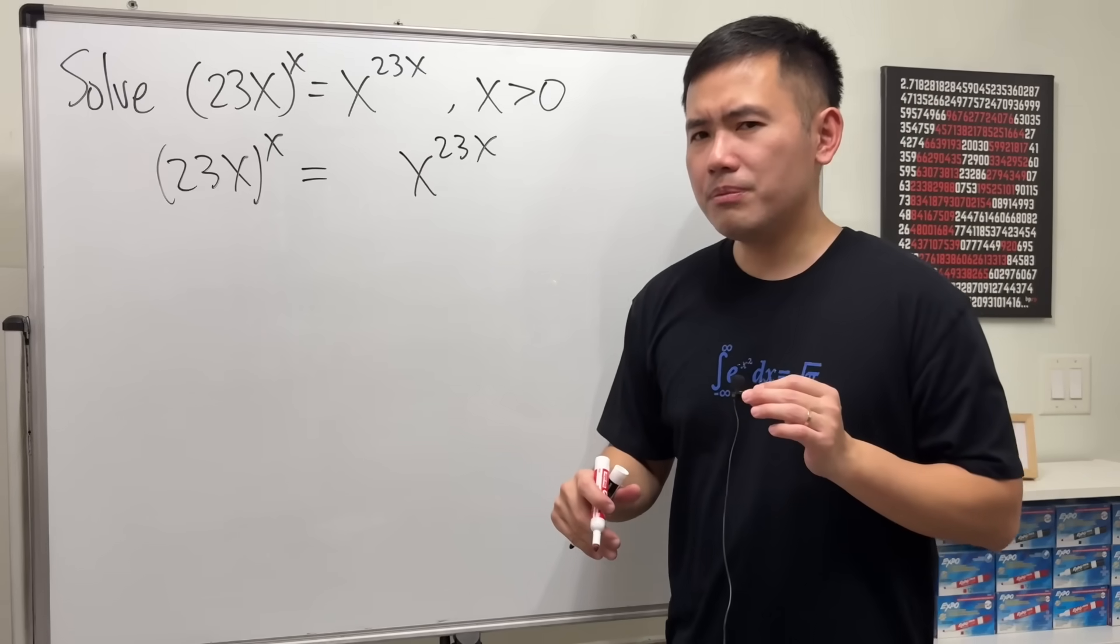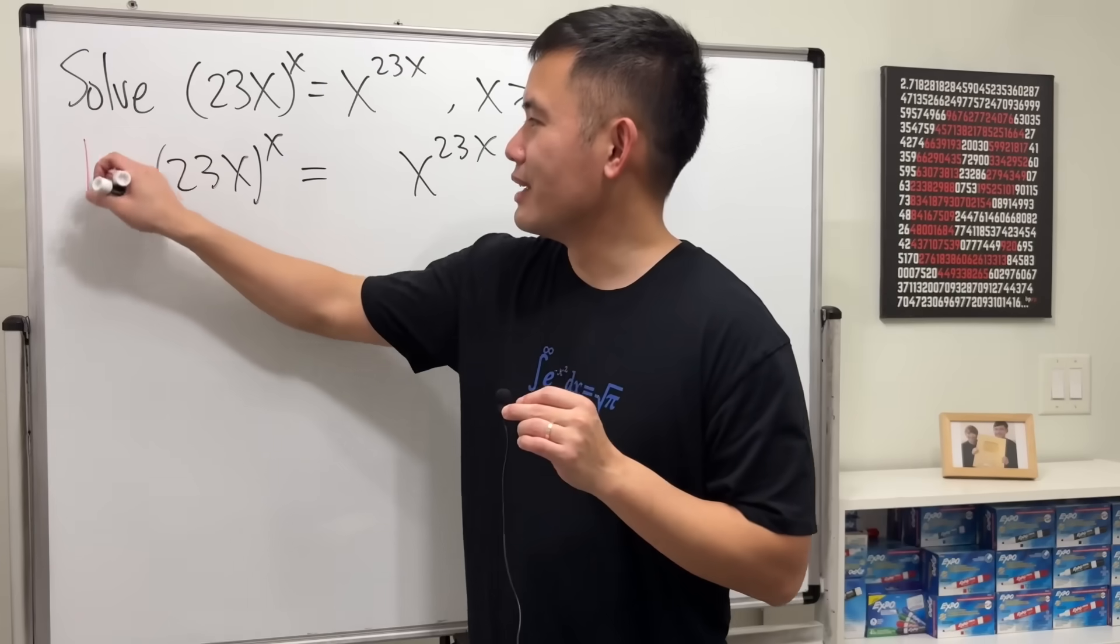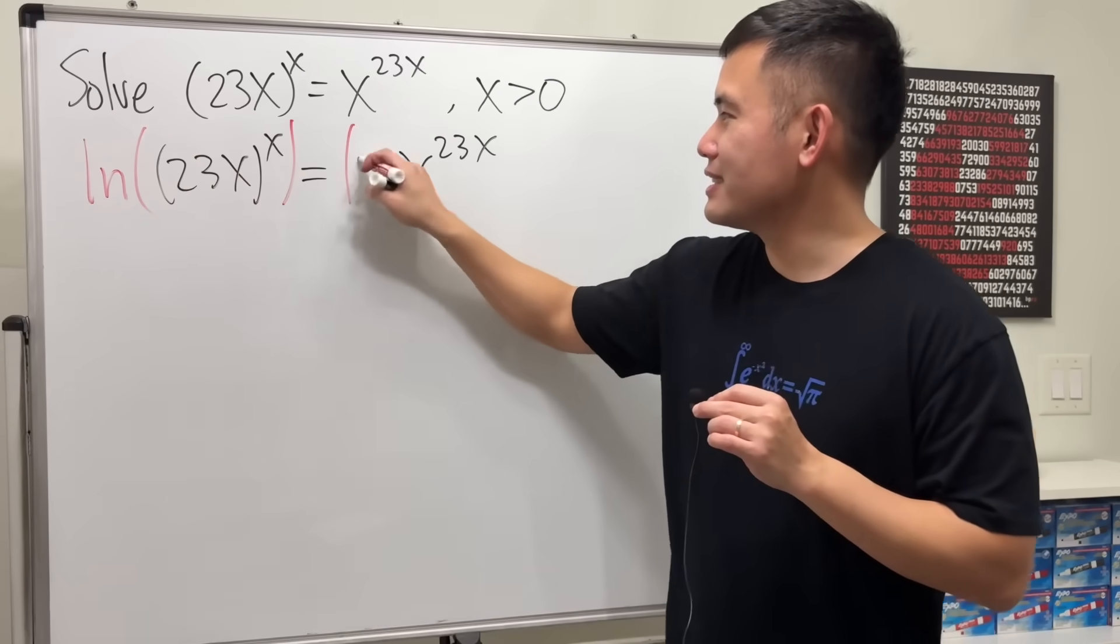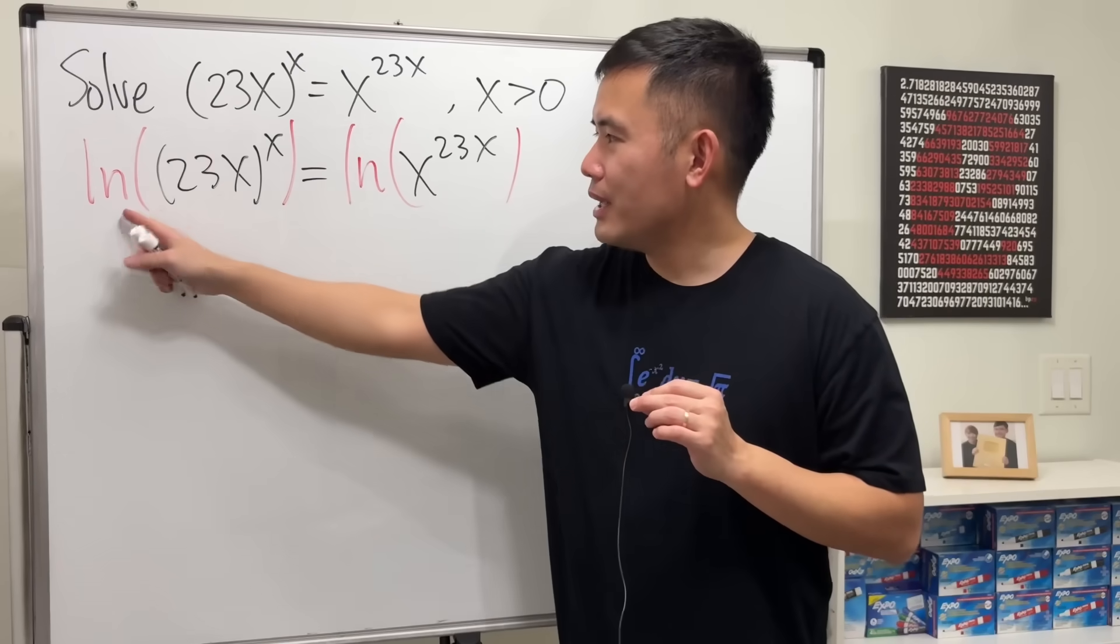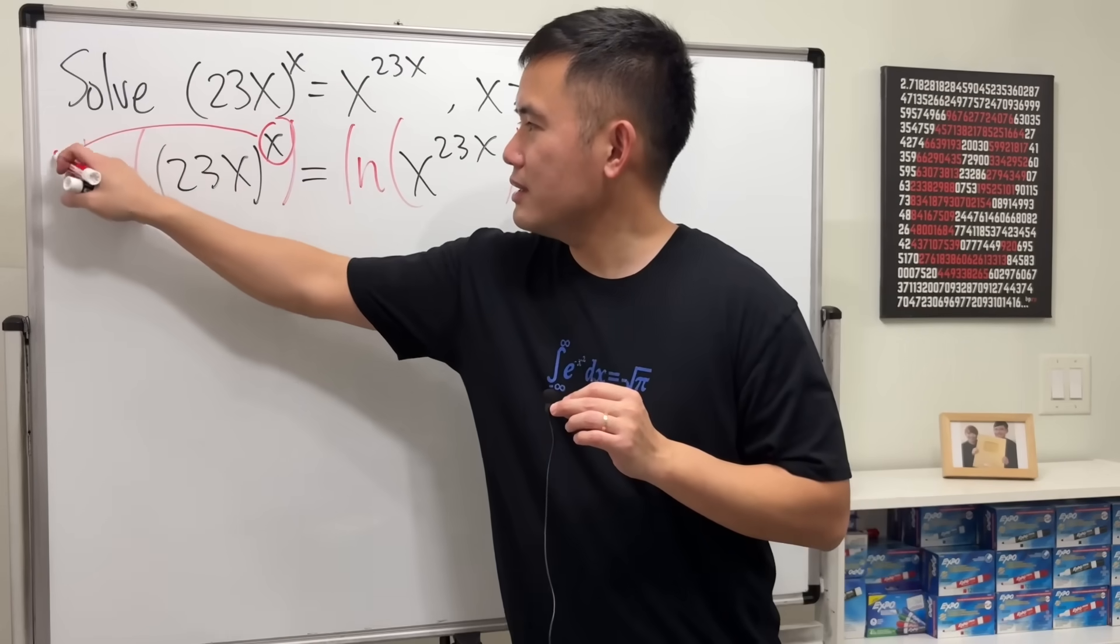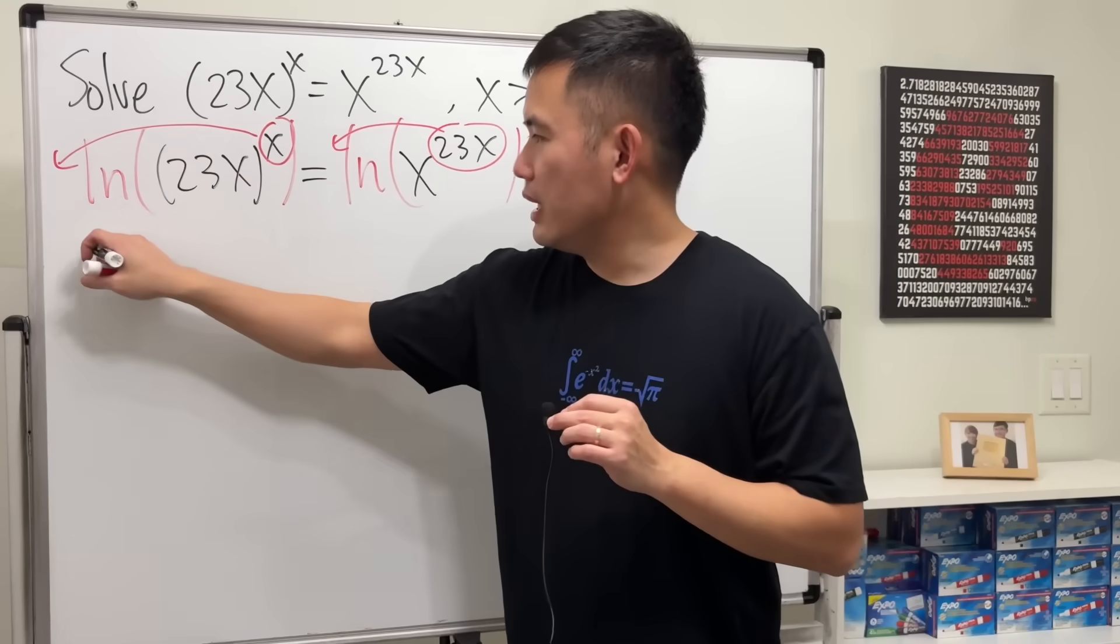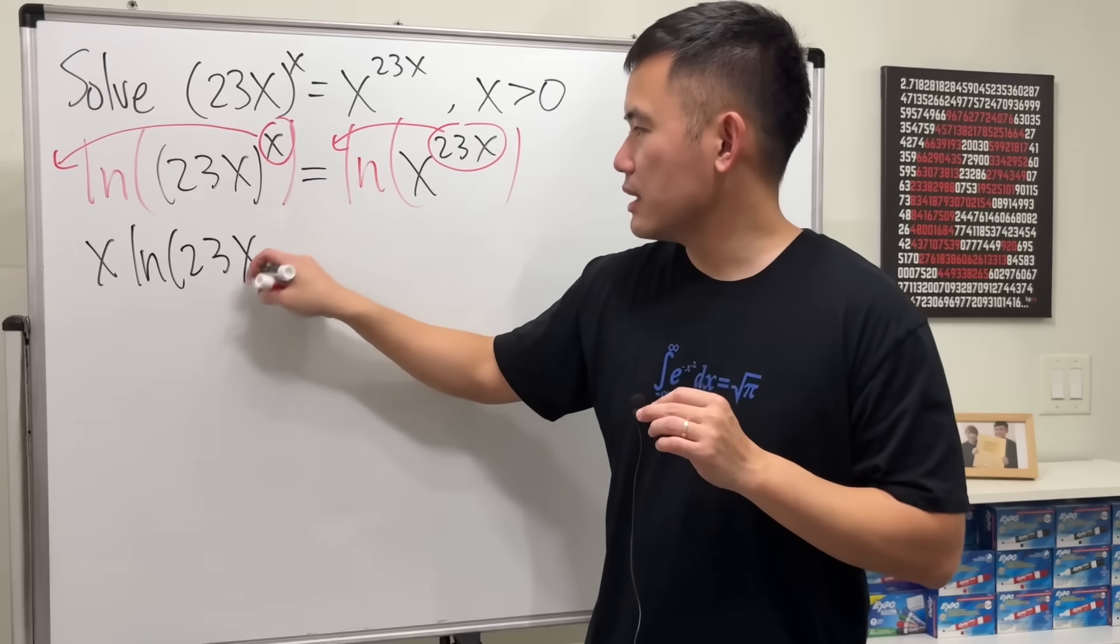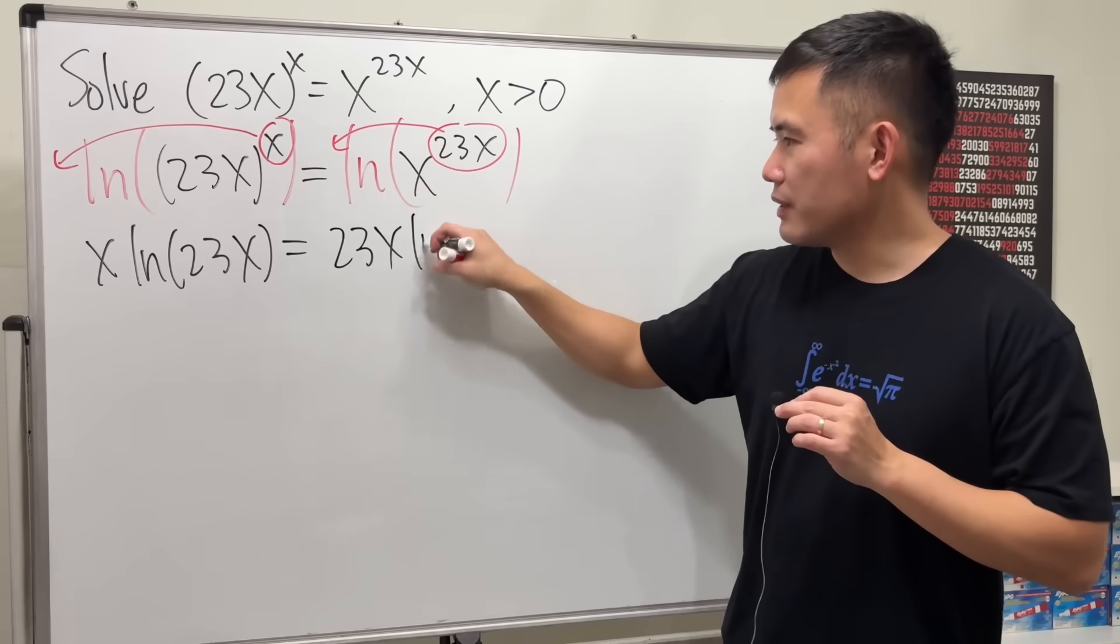It seems that we can use any kind of log. I'm just going to take the natural log on both sides. We have ln of this to the x power, and we can put the power to the front. Likewise, we can do the same thing here, so we get x·ln(23x) = 23x·ln(x).